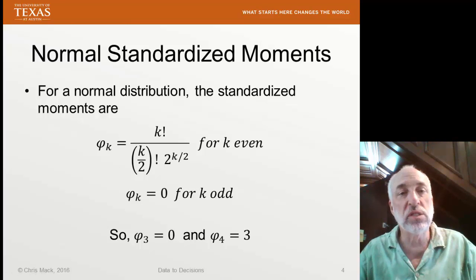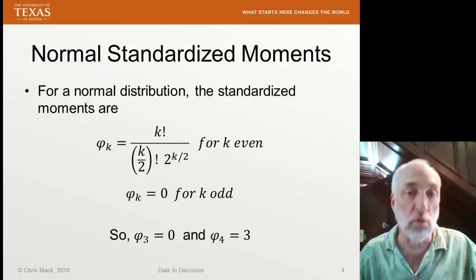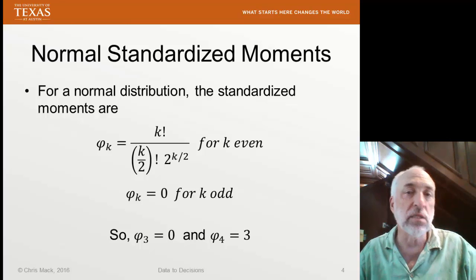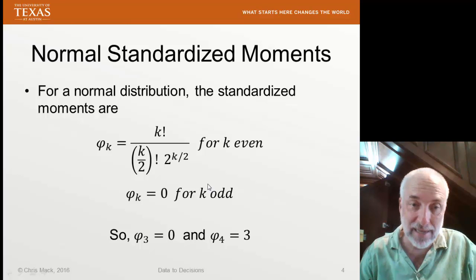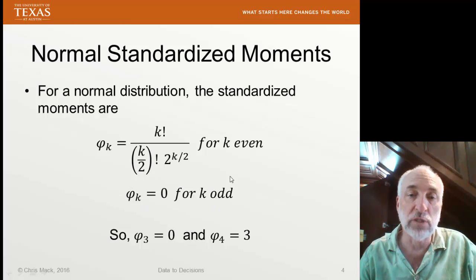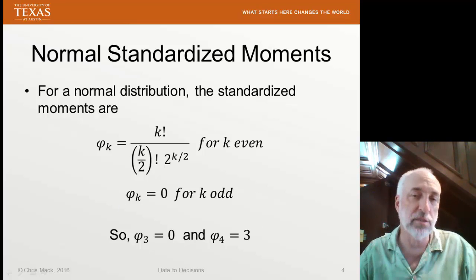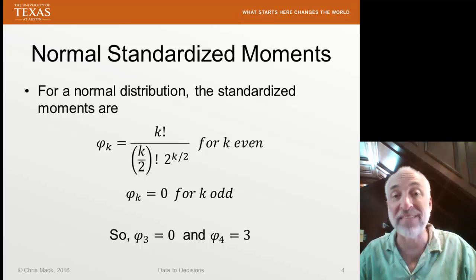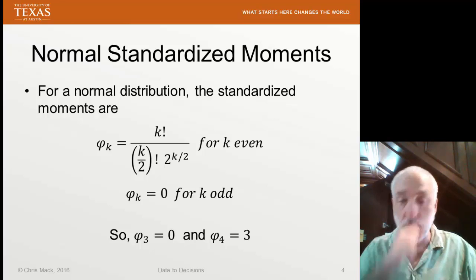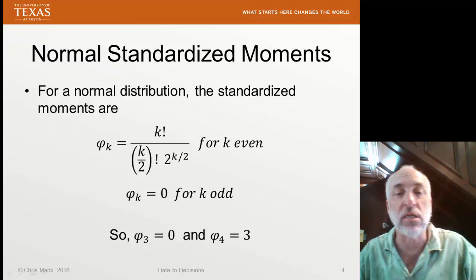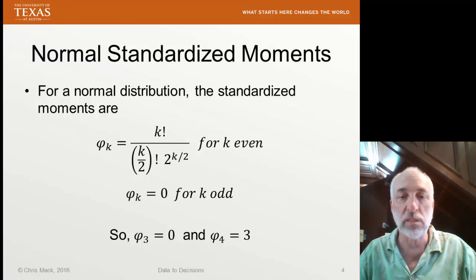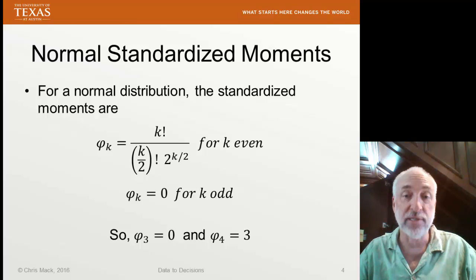Let's see what those standardized moments look like for a normal distribution. We can calculate any of these moments analytically. If k is an odd number, those standardized moments are all zero — this is because we have a symmetric distribution; any symmetric distribution will have all odd moments equal to zero. Even moments will not be zero. We're only going to be interested in the third and fourth standardized moments. For a normal distribution, the third moment is zero and the fourth moment is three.